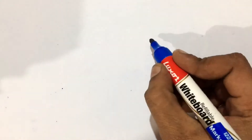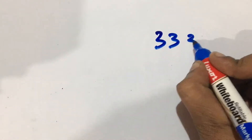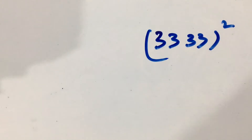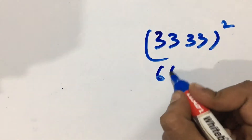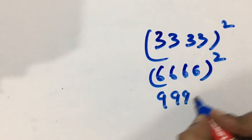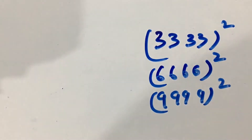Hi friends, hope you are enjoying my videos and using my shortcut tricks in solving problems. Today I have come up with one more shortcut trick. For example, if you have to calculate the square of a number, it requires some time. But for squares of numbers with digits 3, 6, and 9, it is very easy — we just need to follow a logic for it.